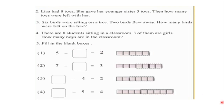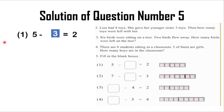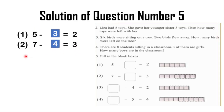Now let's go to the board to solve question number 5. In question 1 the problem is 5 minus blank equals 2, so the box should be filled: 5 minus 2 equals 3 — the answer is 3. Now question 2: 7 minus blank equals 3. It will be like this: 7 minus 4 equals 3, and 7 minus 3 equals 4. So the blank box should be filled with 4.